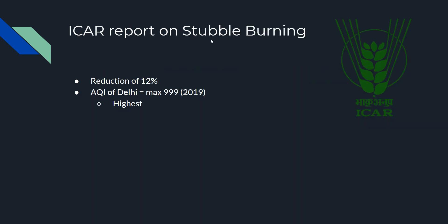Next: ICAR Report on Stubble Burning. The report states that stubble burning has reduced by 12%, yet AQI in Delhi has reached a maximum of 999 — the highest ever. This means current pollution is the worst ever, even though stubble burning has actually reduced.